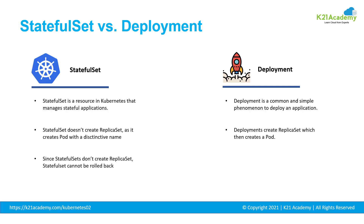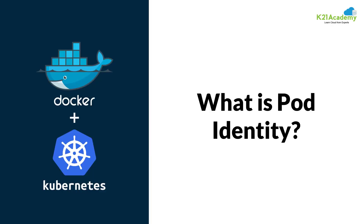Stateful sets don't create a replica set, so the stateful set cannot be rolled back to a previous version. The stateful sets can either be deleted or scaled up or down. Whereas manual rolling back is possible in the case of deployment. Since deployment creates a replica set which then creates a pod, whenever a deployment is updated using rolling update strategy, a new replica set is created. Since we are talking about pods and their unique naming conventions, let's have a look at what is pod identity.